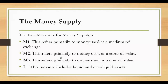Next is M2, which refers primarily to money used as a store of value. In addition to M1, this measure includes money held in savings deposits, money market deposit accounts, non-institutional money market mutual funds, and other short-term money market assets, such as overnight Eurodollars.